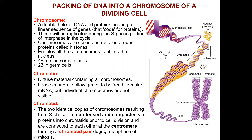Now some terms you need to keep straight. DNA is where our genetic information is — that's where our genes are. A chromosome is the DNA double helix and the proteins holding it together, bearing a linear sequence of genes. Those genes are the things that code for proteins. Chromosomes are replicated during the S phase portion of interphase in the cell cycle.